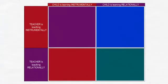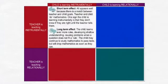Skemp identified the short and long-term effects of teaching and learning instrumentally and relationally. Imagine a teacher is teaching instrumentally, telling children a series of rules and procedures, and imagine the child wants to learn instrumentally. The child has been taught that maths is about getting the right answer. The short-term effect is that all appears well — there is a match between the goal of the teacher and the child.